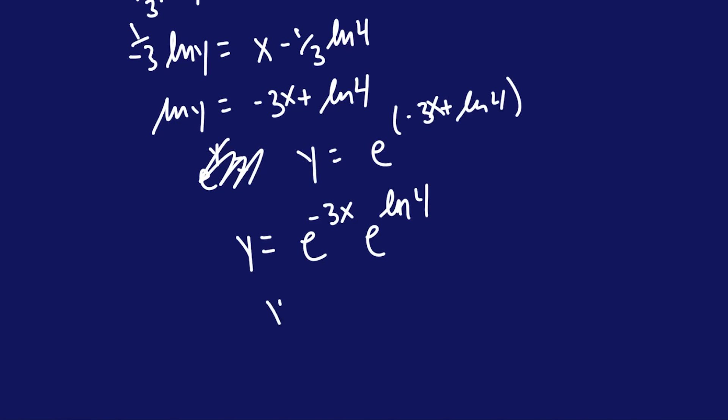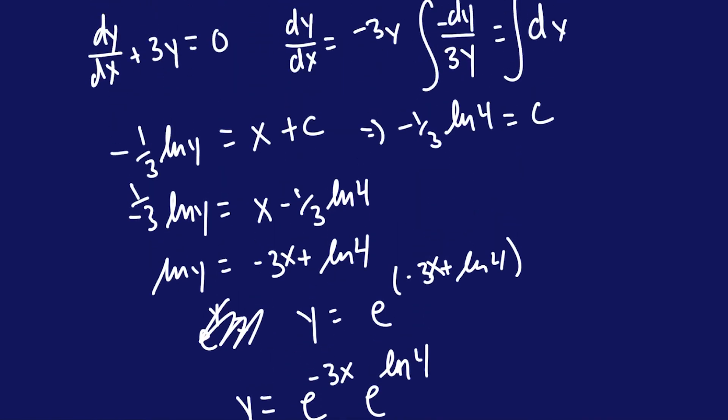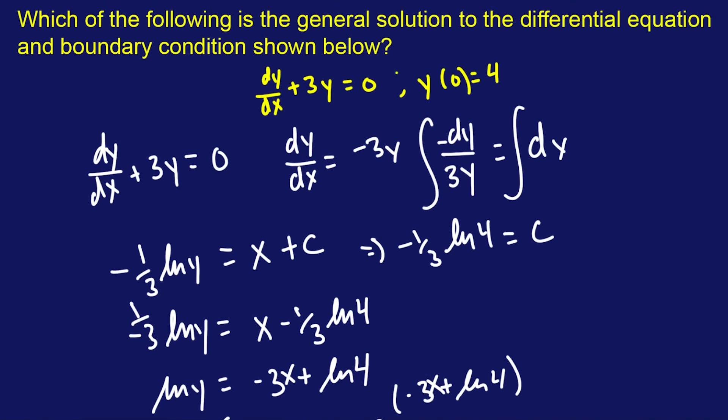So essentially what happens is that we get y equals 4e to the negative 3x. Now that is the solution to the particular solution given the boundary condition of y of 0 equals 4. Now, this is probably the easiest as it's going to get in this FE exam. But let me tell you, it is. See you.